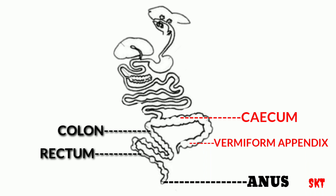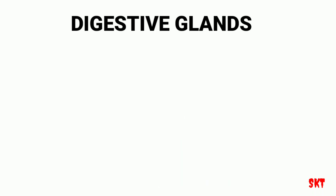Now we have learned about how food passes through the digestive system of the rabbit. We shall now study the digestive glands which are associated with the alimentary canal. These mainly include the salivary glands, liver, pancreas and intestinal glands.